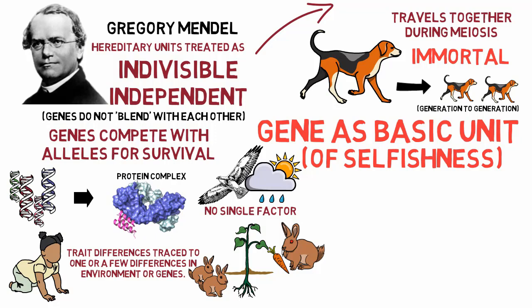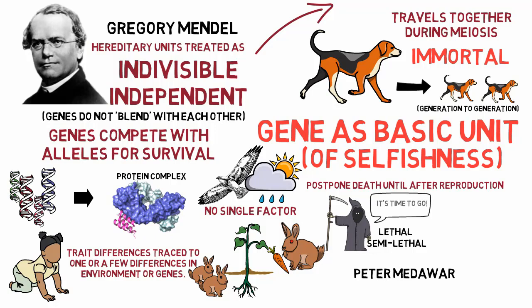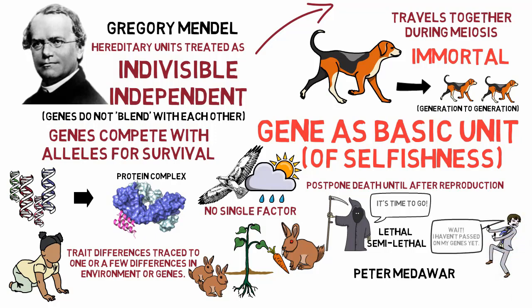Another quality of successful genes is the tendency to postpone the death of their survival machines until after reproduction. Genes that make their possessors die are called lethal genes, and those with debilitating effects are called semi-lethal genes. Based on Peter Medawar's theory of aging, lethal genes tend to be removed from the gene pool, but some late-acting lethal genes may be more stable in the gene pool than early-acting ones, provided their lethal effects show after the body has reproduced. This may explain genes that cause cancer in old age being passed to numerous offspring, whereas genes causing cancer in young adults would not. Senile decay is thus the accumulation of late-acting lethal and semi-lethal genes in the gene pool, as there is less selection pressure against them.